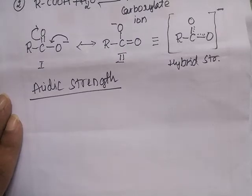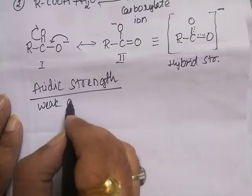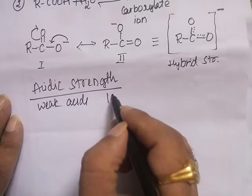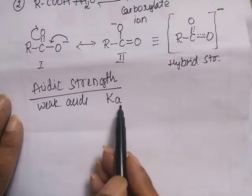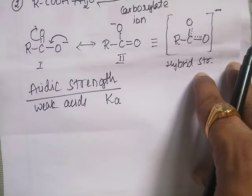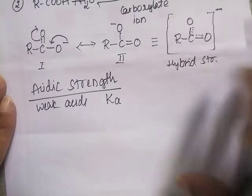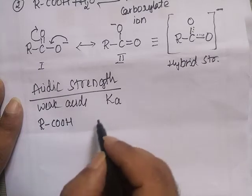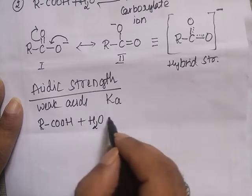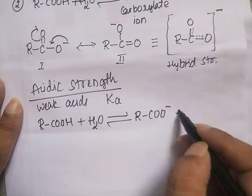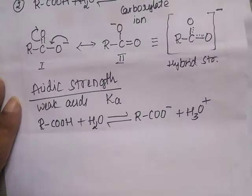Carboxylic acids are weak acids, and their strength is expressed in terms of the dissociation or ionization constant Ka. Ka is the acid dissociation constant. Let us consider a carboxylic acid which partially dissociates in water to form the carboxylate ion and the hydronium ion (H₃O⁺).